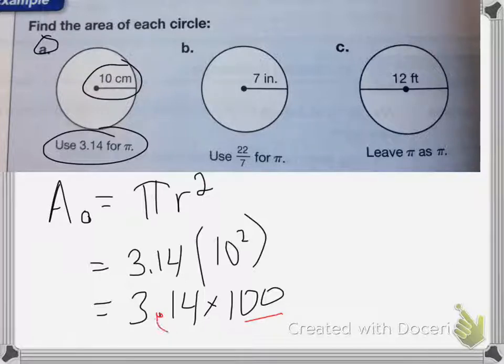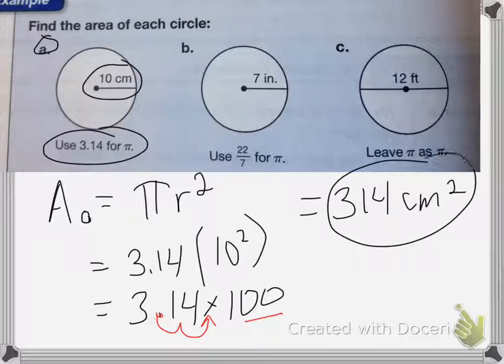So I'm going to move over 1, 2 places. So my answer is 314 centimeters squared for A.